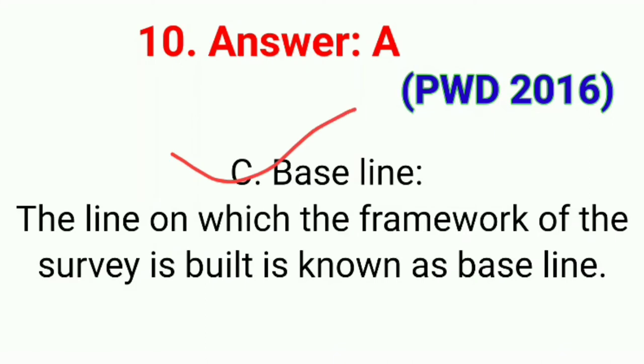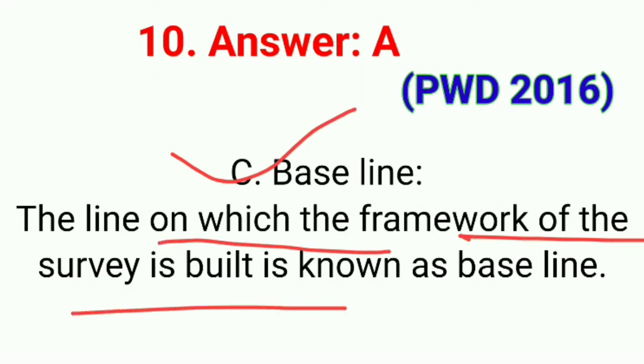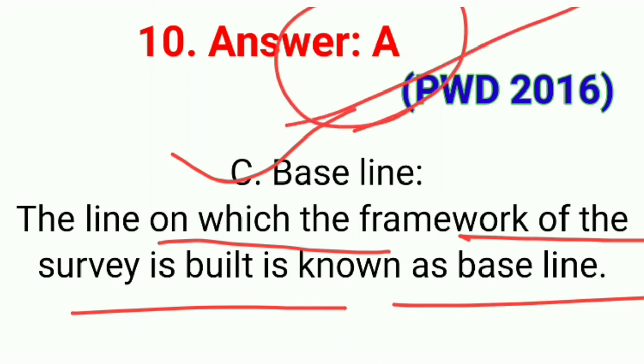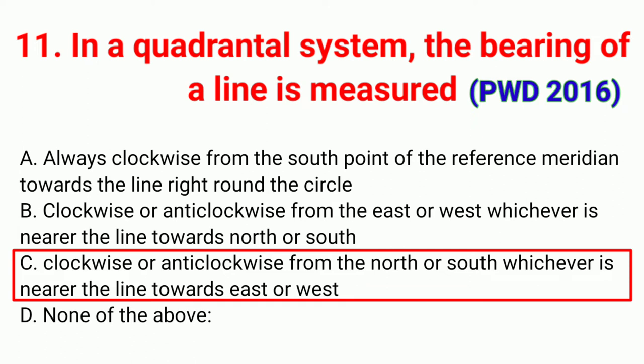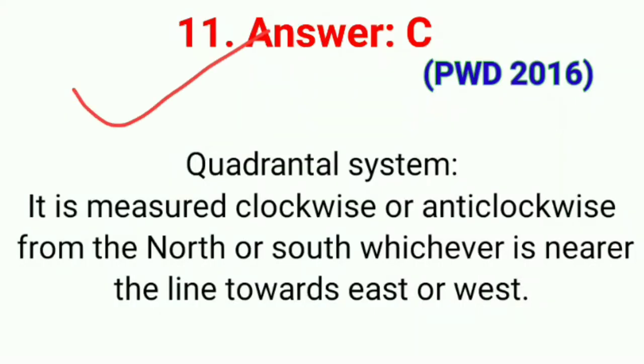The baseline is the line on which the framework for the survey is built. Question number eleven: In the quadrant system, the bearing of a line is measured. The correct answer is option C: clockwise or anticlockwise from north or south, whichever is nearer the line, towards east or west.